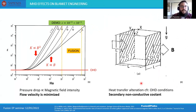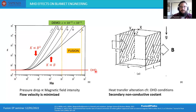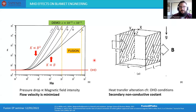One of the most important consequences for engineering the breeding blanket is the increase of pressure loss. A diagram showing the dimensionless pressure coefficient scaled with magnetic field intensity through the Hartmann number reveals that in hydrodynamic conditions the pressure coefficient is independent of Hartmann number, but when we apply a magnetic field it grows very fast. In a fusion reactor, the pressure loss is expected to be between four and six orders of magnitude larger than in hydrodynamic conditions, so flow velocity is usually minimized.